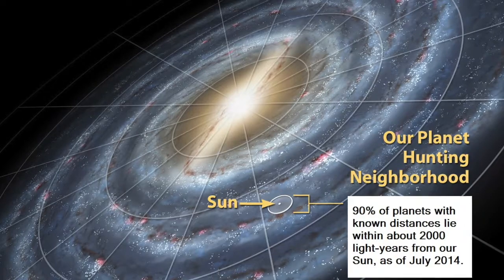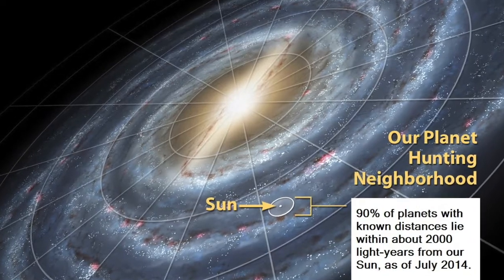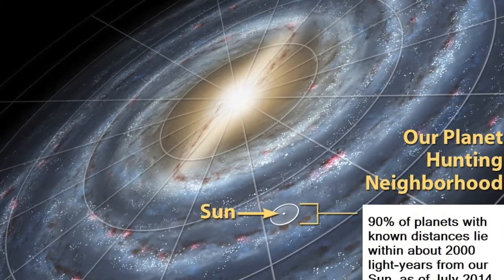We've detected over 4,100 confirmed exoplanets throughout our universe, most of which are in our Milky Way galaxy. The number keeps climbing, so it's highly likely that there are many more exoplanets throughout different galaxies in our universe.